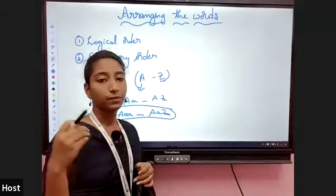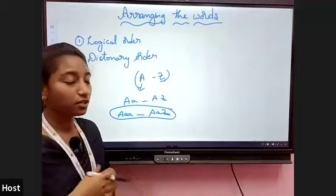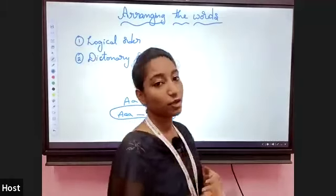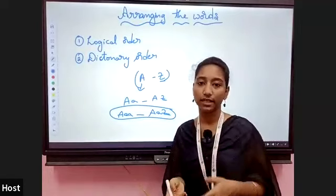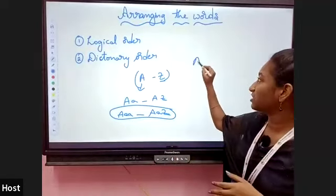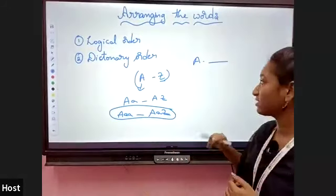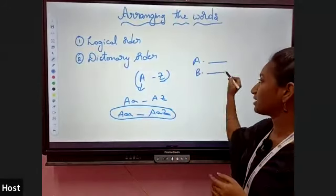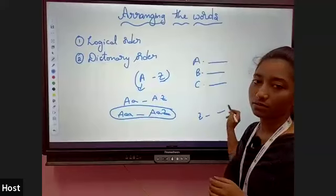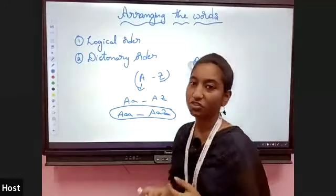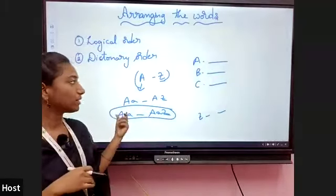While you observe the register of your school or class, you see that names are arranged according to their initial letter. First, names with the initial A, then B, then T, up to Z. Like this, we arrange the words in dictionary order — from A to Z.